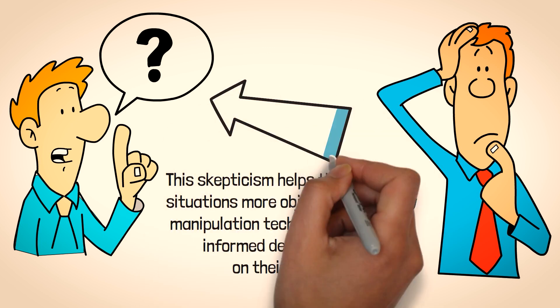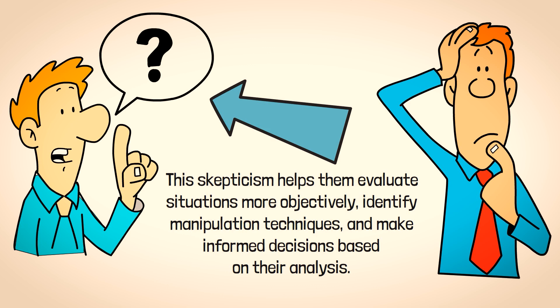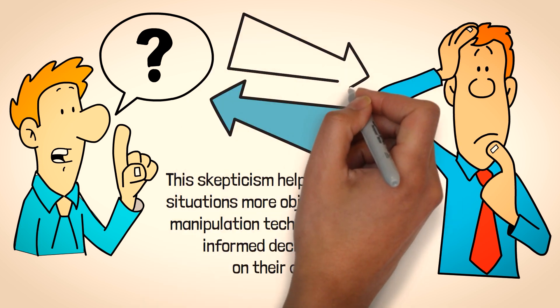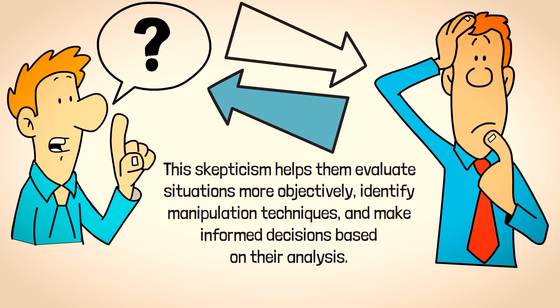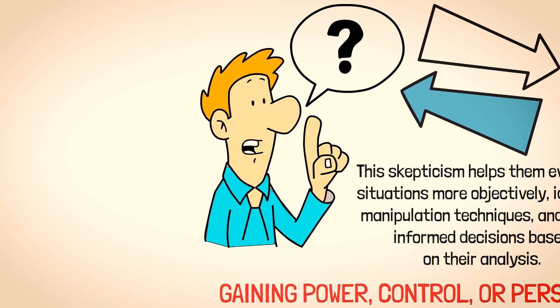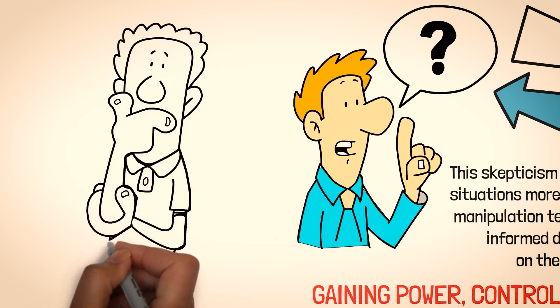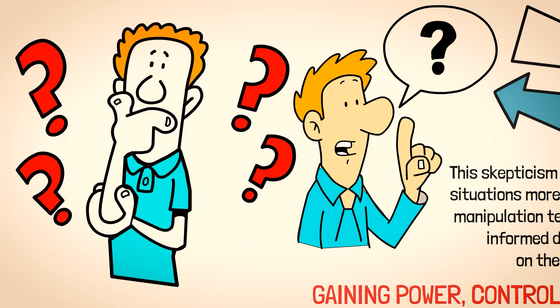Critical thinking encourages sigma males to question the motives and intentions behind manipulative behavior. They understand that manipulators often have ulterior motives, such as gaining power, control, or personal advantage. By critically examining the intentions of others, sigma males can determine whether someone's actions are genuinely aligned with their best interests, or if they are being manipulated.